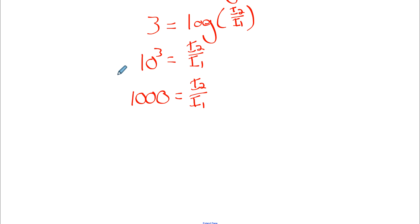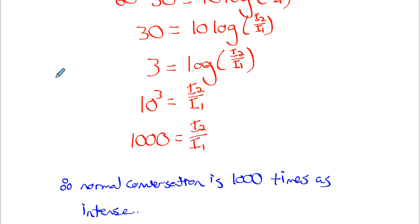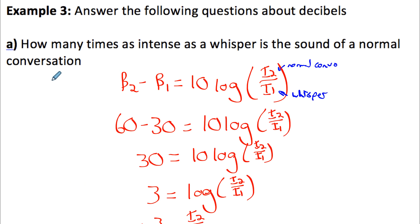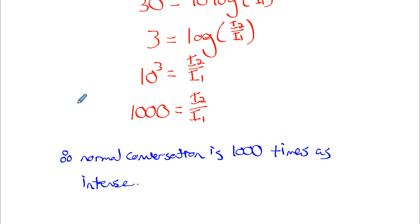So the ratio of intensity of normal conversation to whisper is 1000. If we had set it up the other way — whisper to normal conversation — we'd get 30 minus 60 equals negative 30, giving 10 to the negative 3, which is 1/1000. Either way, as long as you interpret it properly, the ratio of normal conversation to whispering is 1000 to 1.